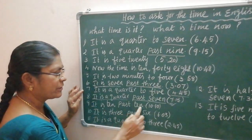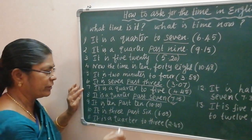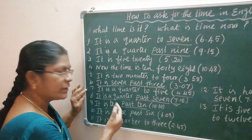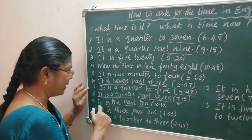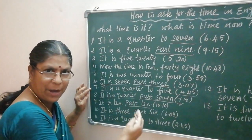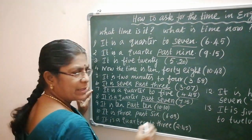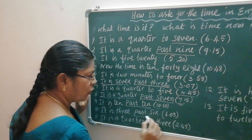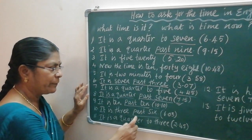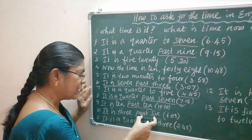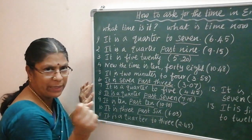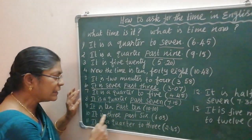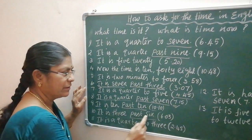It is ten past ten — that means ten-ten. Past ten, time ten is over. After that, how many minutes did you come across? Ten. So it is ten past ten — that means the time is 10:10. It is three past six. How many hours did you cross? Six hours. After six hours you are reaching three minutes. It is three past six.